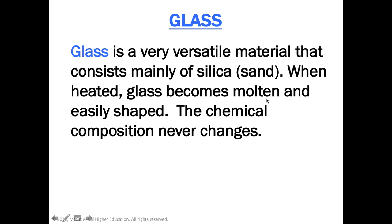Heated glass becomes molten and easily shaped, and the chemical process never changes — meaning that once it's glass, it's glass. It's the same material when it's liquid and melted, and it's the same material when it hardens and becomes solid.